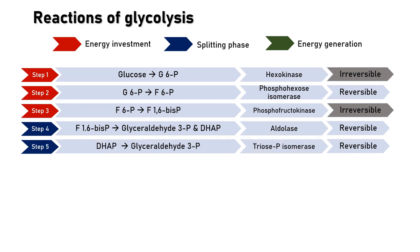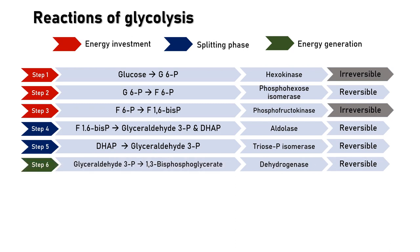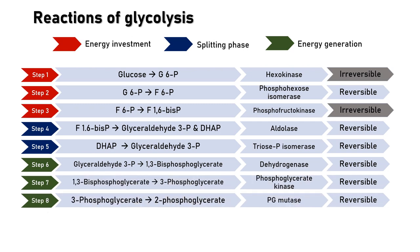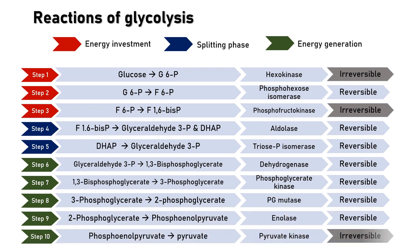Dihydroxyacetone phosphate then converts into glyceraldehyde-3-phosphate. From glyceraldehyde-3-phosphate it converts to 1,3-bisphosphoglycerate, then 3-phosphoglycerate, then 2-phosphoglycerate, then phosphoenolpyruvate, and finally to pyruvate — carried out by pyruvate kinase, which is again irreversible. So out of the 10 steps of glycolysis, 3 steps are irreversible: step 1, step 3, and the last step. These are the rate-limiting steps carried out by hexokinase, phosphofructokinase-1, and pyruvate kinase.